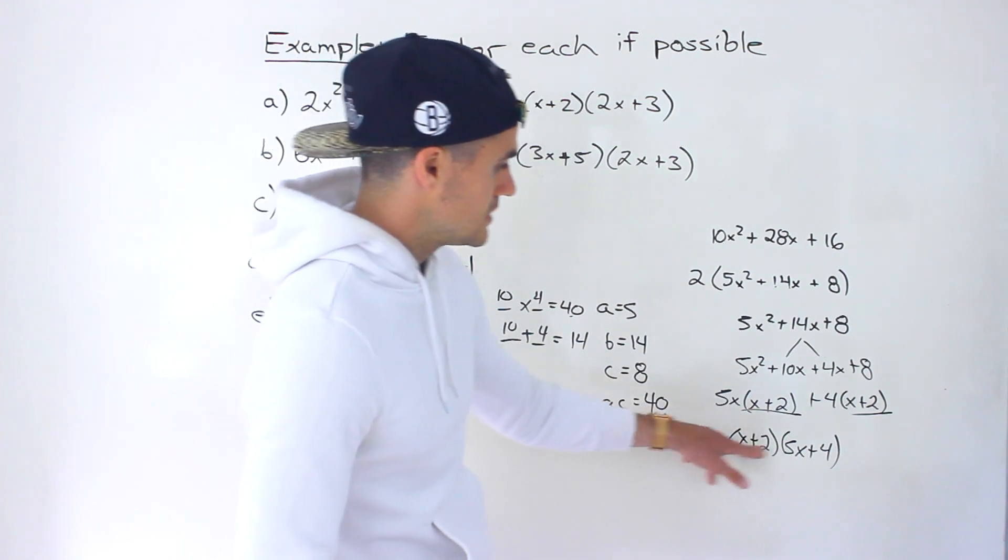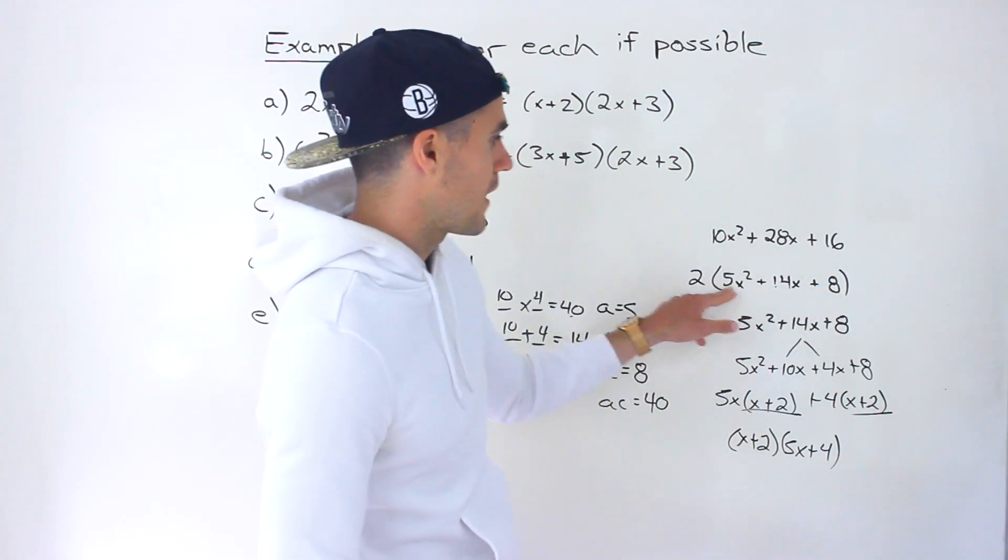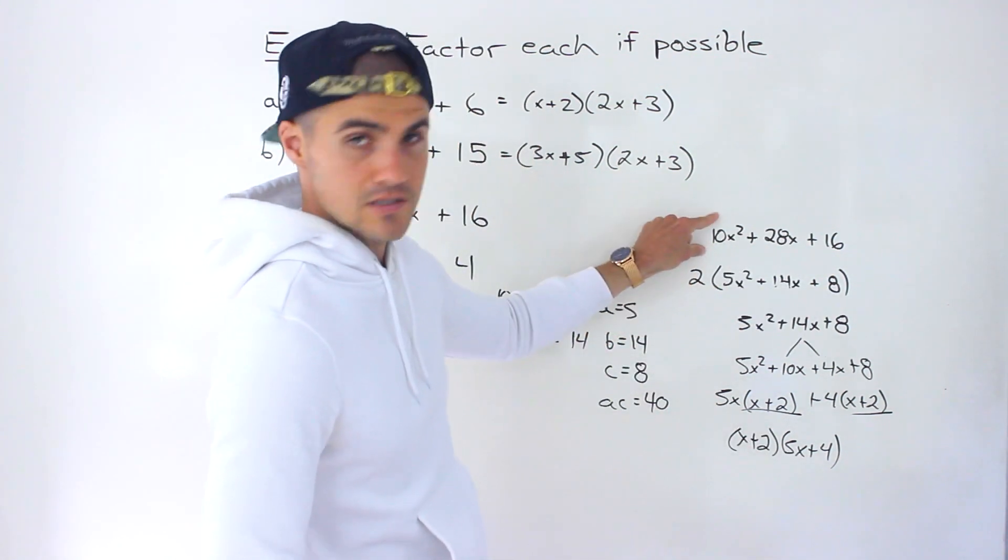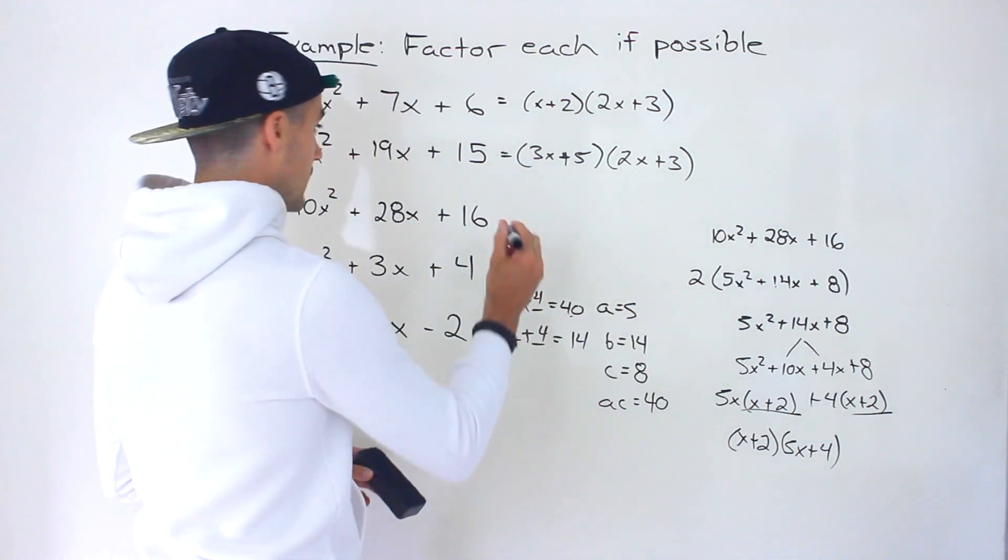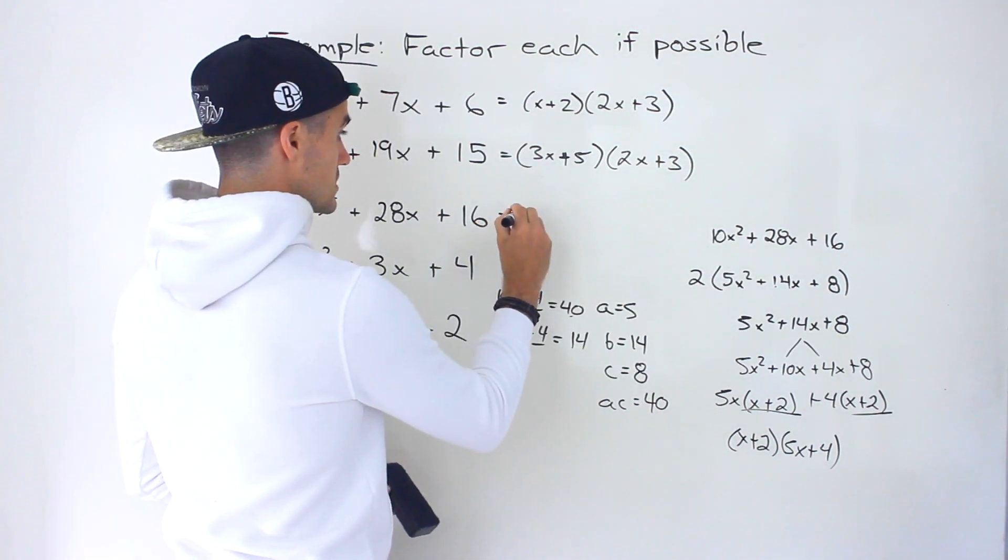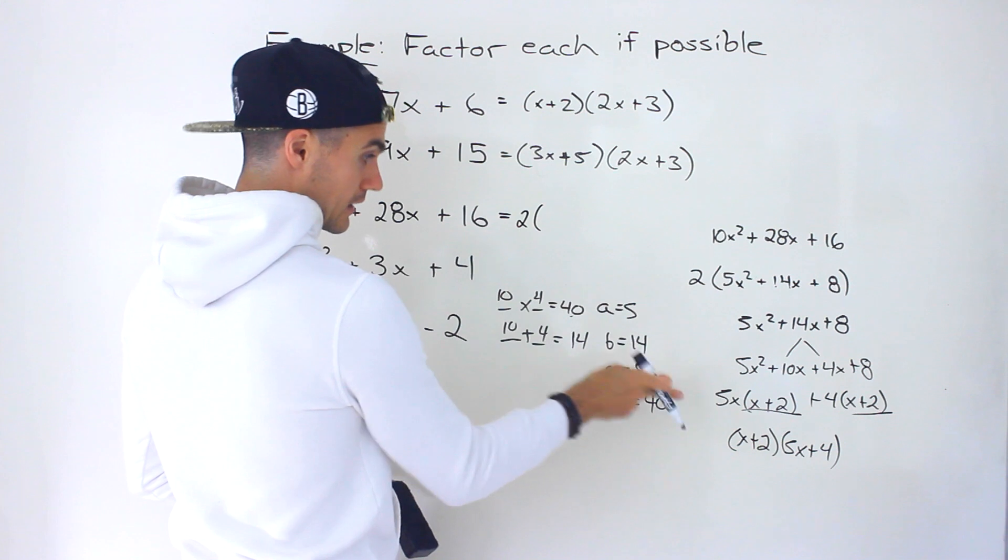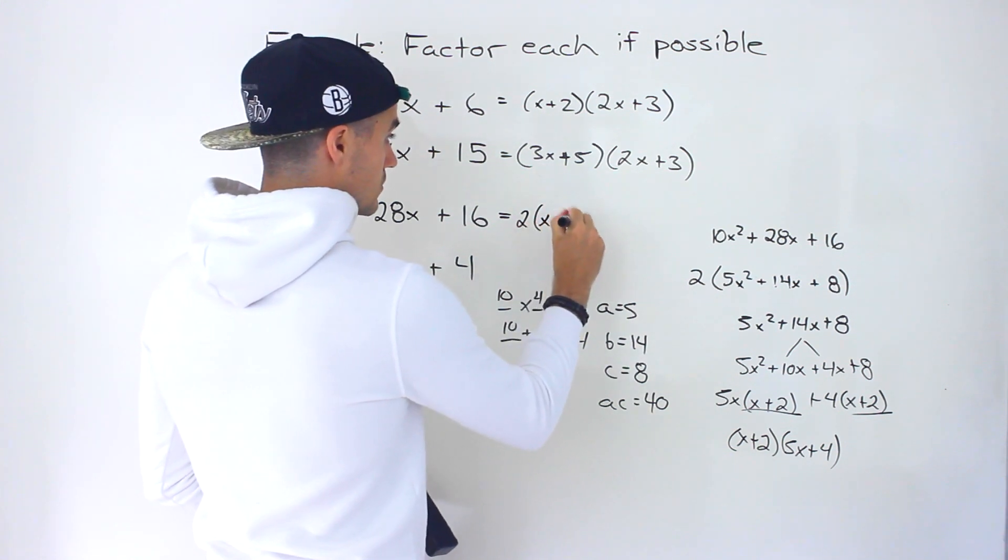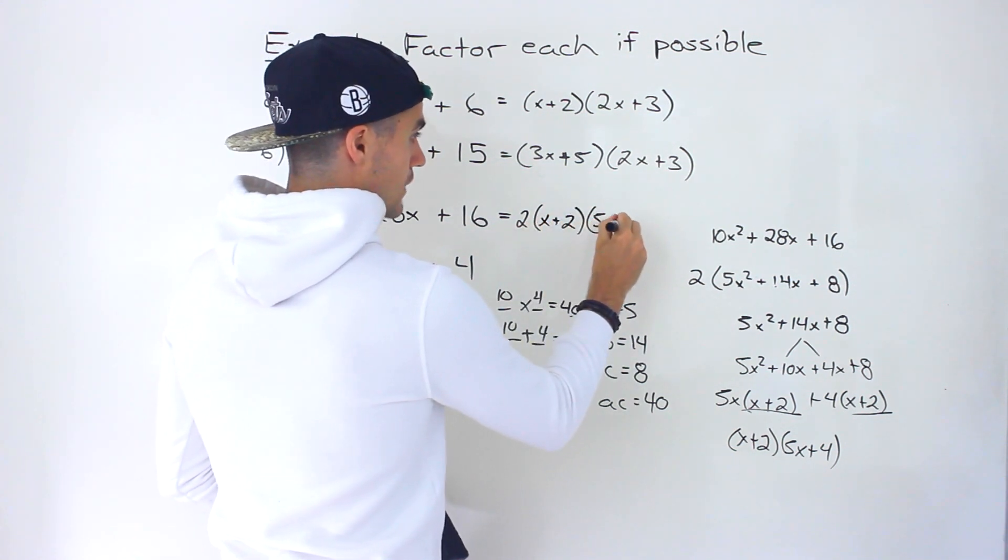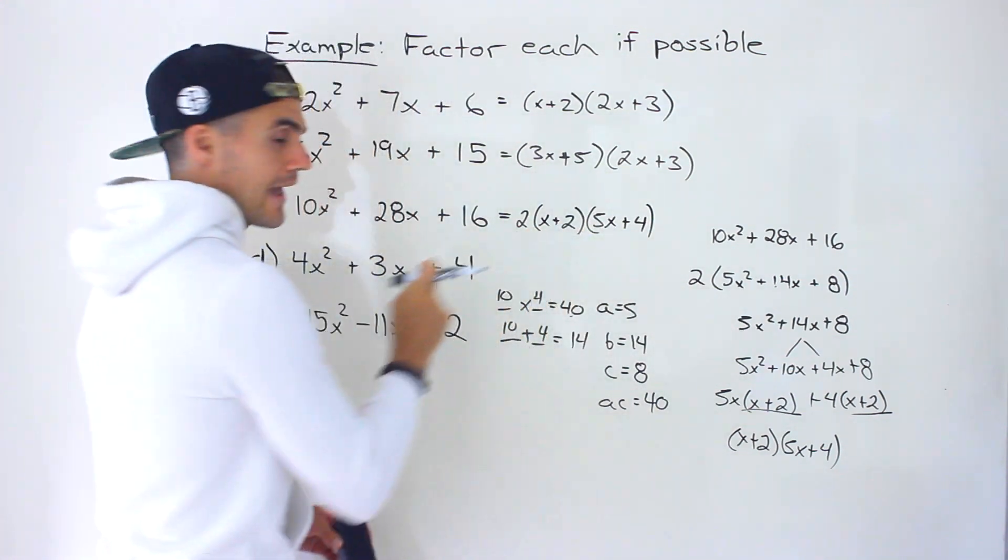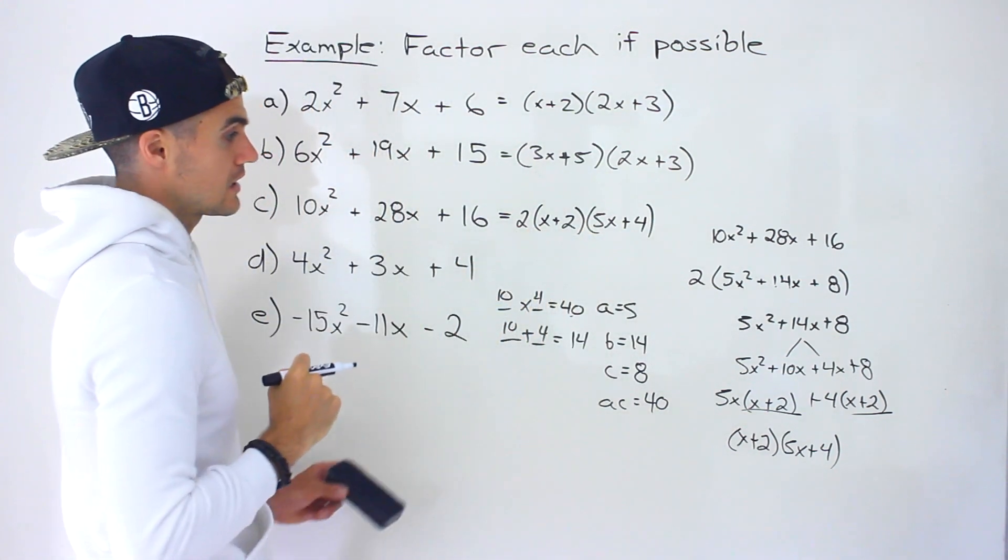We end up with that right there. But remember, these two factors are this whole bracket, but we still have that 2 because this was the initial expression. So the final answer for part C ends up being 2(x + 2)(5x + 4). Don't forget any greatest common factors that you take out initially.